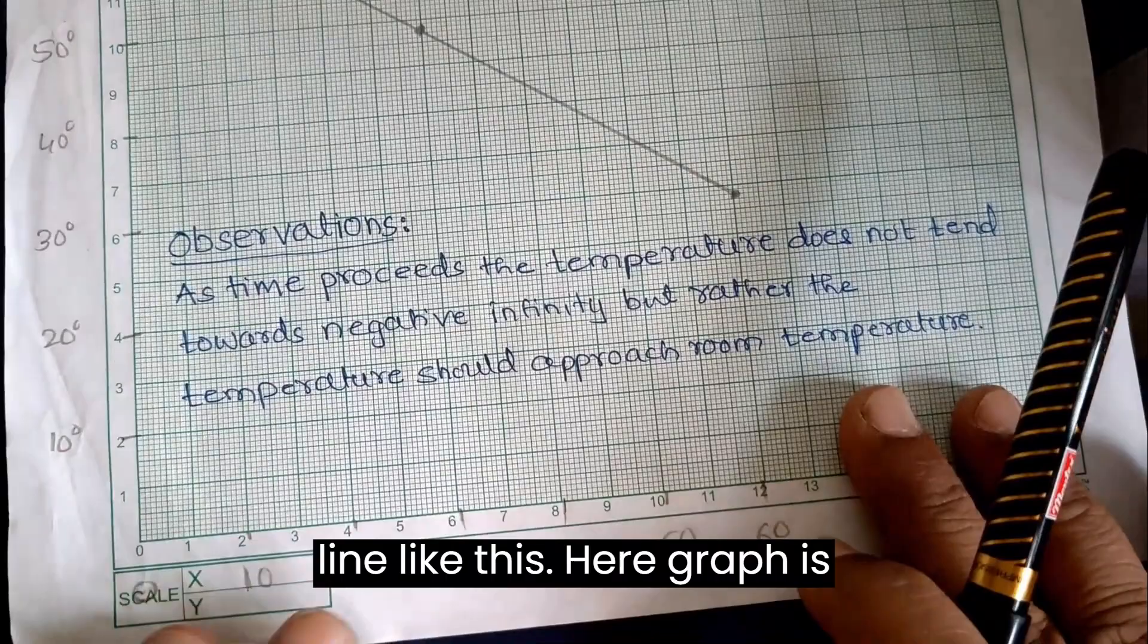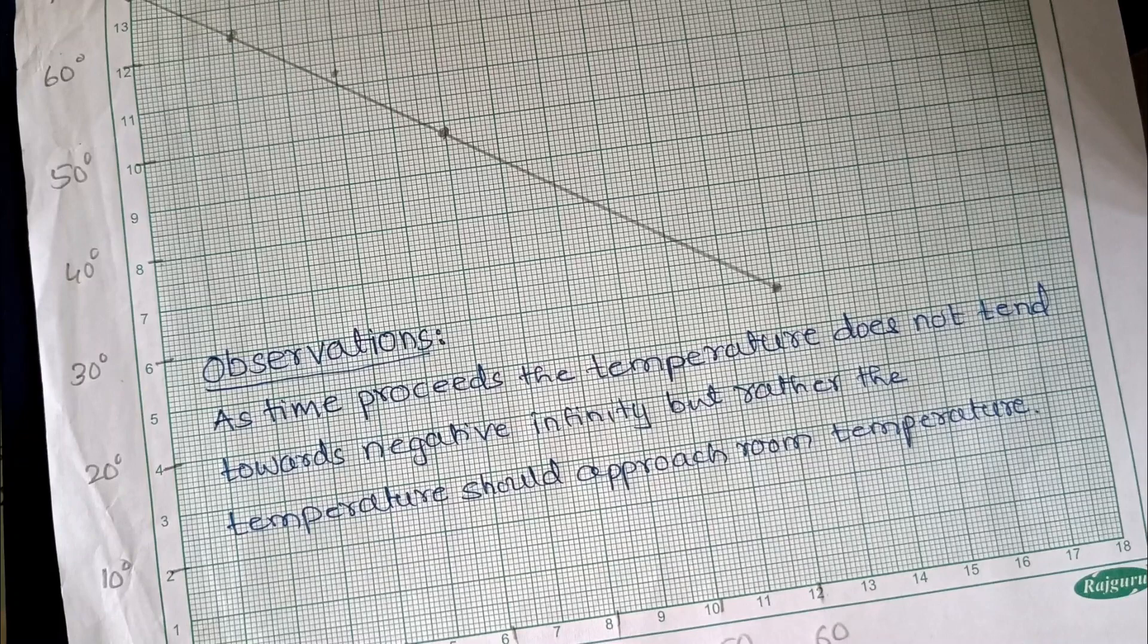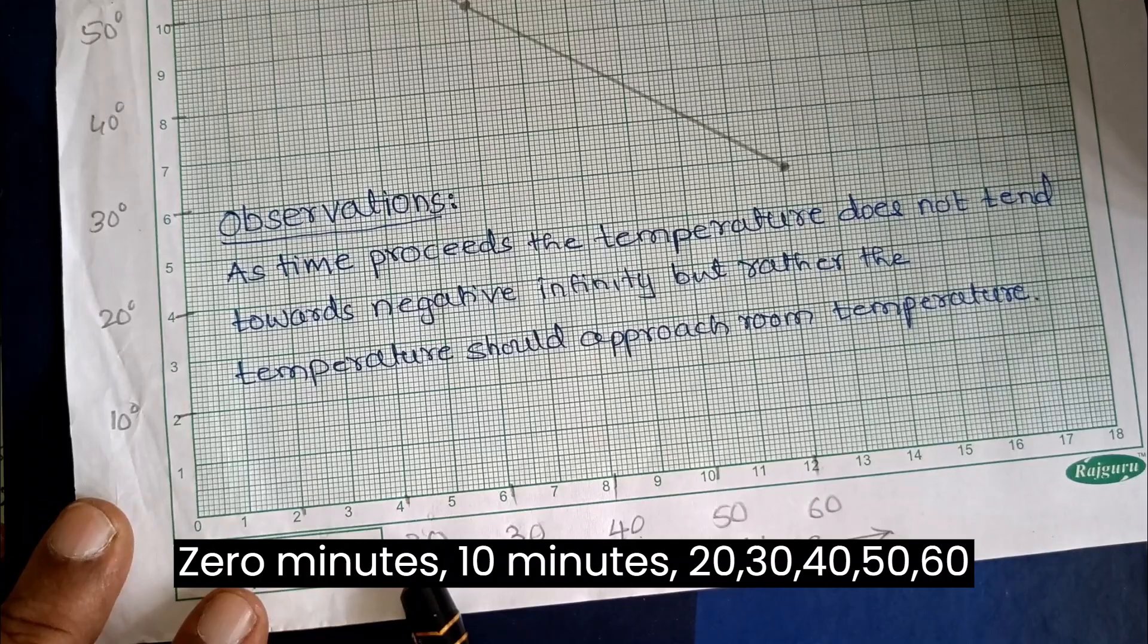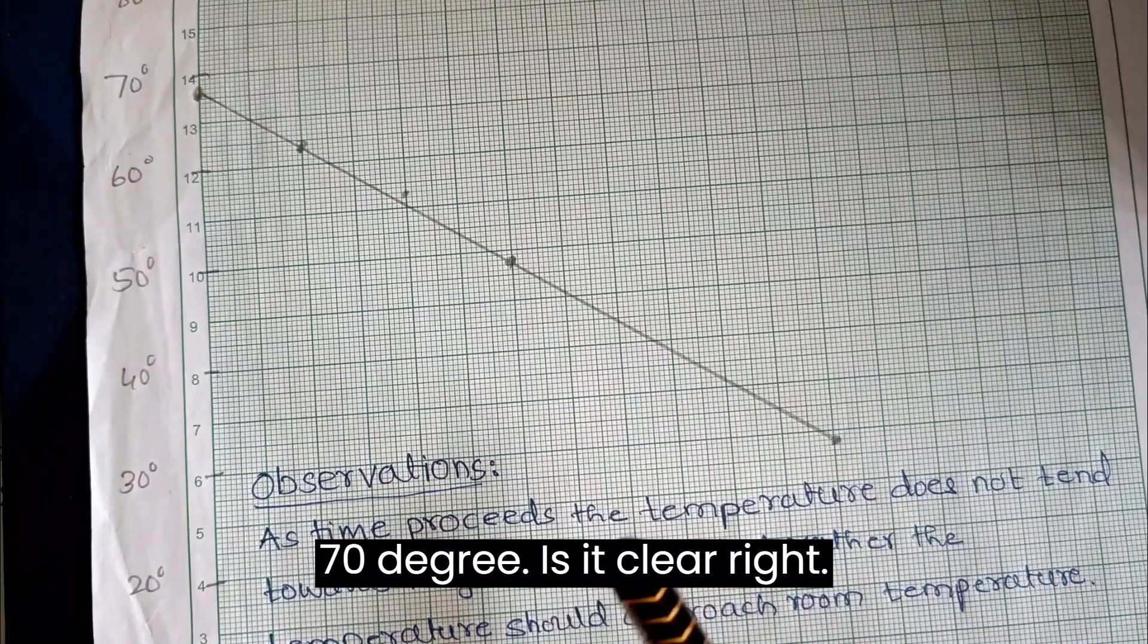Now I can draw the graph of this equation. I hope you will get a straight line like this. The graph is time versus temperature. Here 2 centimeter is treated as 10 minutes: 0 minutes, 10 minutes, 20, 30, 40, 50, 60 minutes, and 70 degrees.